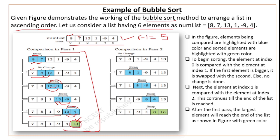In the second pass, the same process repeats. Compare 7 and 8 — no change. Compare 8 and 1 — swap: 1 goes to 8's position, 8 moves forward. Then compare 8 and -9 — swap: -9 goes to 8's position. Then compare 8 and 4 — swap. After the second pass, the second largest element (8) is in its correct position at the second-to-last slot.